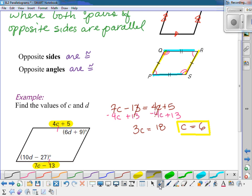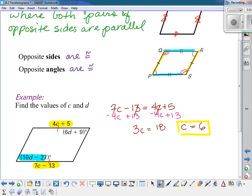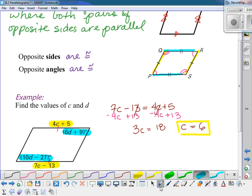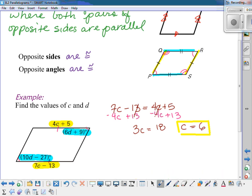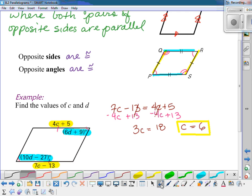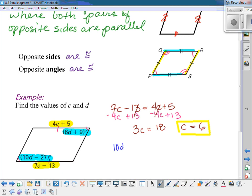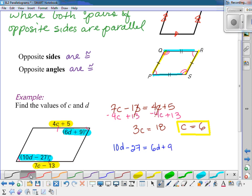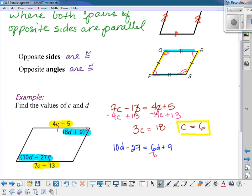Then if we look in our figure here, I have opposite angles here. And same thing, those opposite angles are congruent to each other. So that means that their expressions would also have to be equal. So 10d minus 27 would have to equal 6d plus 9. And so again, I can use algebra to solve it. I subtract 6d from both sides and add 27 to both sides.